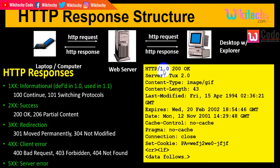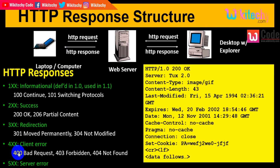In the HTTP response, 1.0 indicates the HTTP version and 200 indicates success. Status codes starting with 1 are informational, 2 means success, 3 means redirection (moved permanently), 4 means client error — for example, 400 is bad request, 403 is forbidden, 404 is not found — and 5 means server error, such as 500 internal server error, 503 service unavailable, and 505 HTTP version not supported.